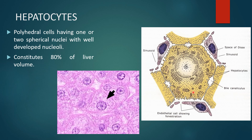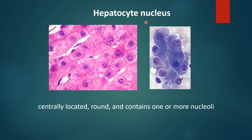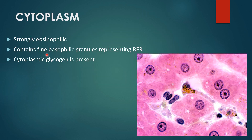In diagrams of hepatocytes, the centrally located nucleus is visible along with endoplasmic reticulum, Golgi apparatus, and large numbers of mitochondria. Bile canaliculi are formed by the junction between two adjacent hepatocytes. The perisinusoidal space is present between the sinusoidal epithelium and the hepatocyte cell membrane. Hepatocyte nuclei are centrally located, round, and contain one or more nucleoli. In special stains, two nuclei can be seen in some cells. Cytoplasm is strongly eosinophilic, containing fine basophilic granules representing large amounts of rough endoplasmic reticulum, and cytoplasmic glycogen is also present.